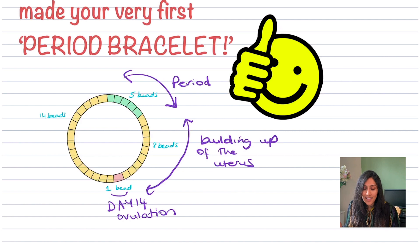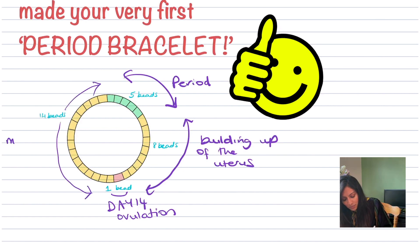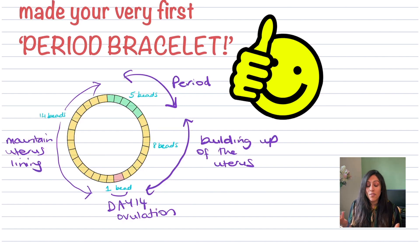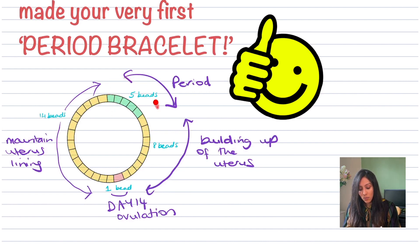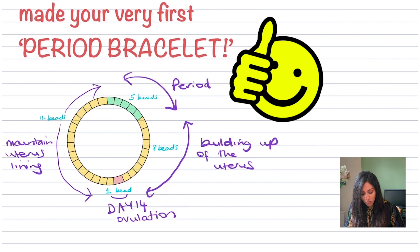Day 14 is when the egg is released. The next 14 days after that is really just maintenance — we maintain the uterus lining because we're waiting to see if the egg is going to be fertilised by sperm and implanted into the uterus. If it isn't, which is usually the case, we start off at day one again, reset the whole cycle, and the female will undergo her period again. So the cycle continues — that is a representation of the menstrual cycle.